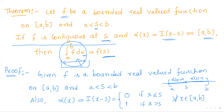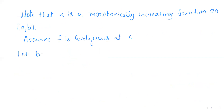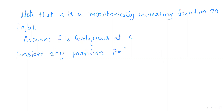Since we have a monotonically increasing function α on this closed interval and a bounded real-valued function f, we can now discuss the Riemann-Stieltjes integrability of f with respect to α. We assume f is continuous at s. To discuss Riemann-Stieltjes integrability we need a partition, so consider any partition P with four elements {x₀, x₁, x₂, x₃} of [a, b].